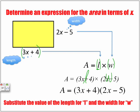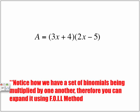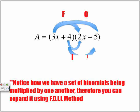Notice here, we have a set of binomials being multiplied by one another. What we're going to have to do is we're going to need to FOIL: first, outer, inner, last. Notice how we have a set of binomials being multiplied by one another. Therefore, you can expand it using the FOIL method. First, outer, inner, last.